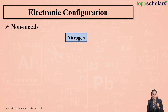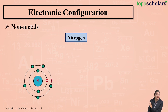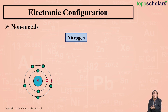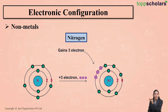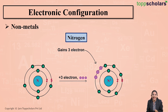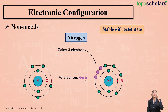Let's understand this with an example. The atomic number of nitrogen is 7, so its electronic configuration is 2, 5. There are five electrons in the outermost shell of nitrogen. For becoming stable, nitrogen needs eight electrons, so it requires three more. Nitrogen accepts three electrons and forms an N3− anion. There are then eight electrons in the outermost shell, so nitrogen becomes stable with the octet state.